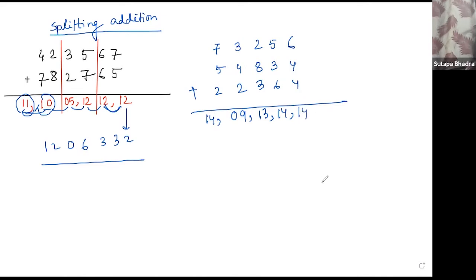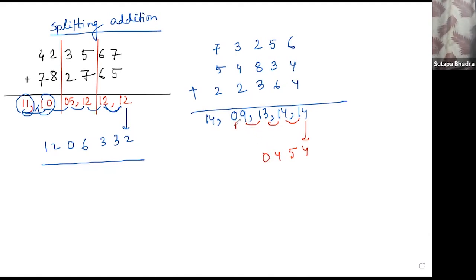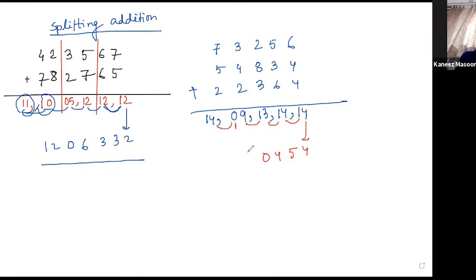Now we will do addition. That is 4 down here. Then 4 plus 1, 5. 3 plus 1, 4. Now 9 plus 1 is 10. So 0 down and 1 carry here. And 0 plus 1 — that is, this 1 will be added here. 0 plus 1 plus 4, that is 5.